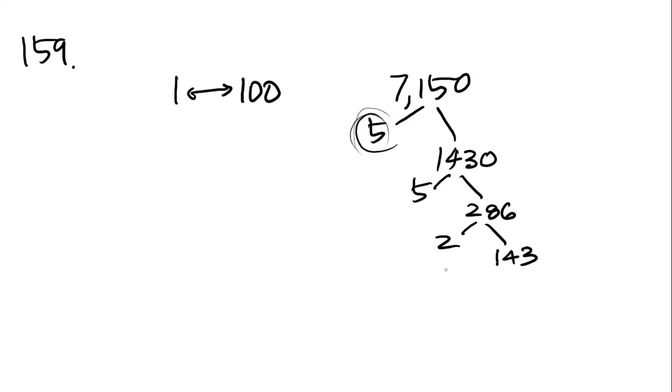143. When you get to 143, it's very hard to figure out what is a factor of 143. But a trick that I like to use is whenever you see a three-digit number where the number on the left and the number on the right add together to create the number in the middle, you know it's divisible by 11.